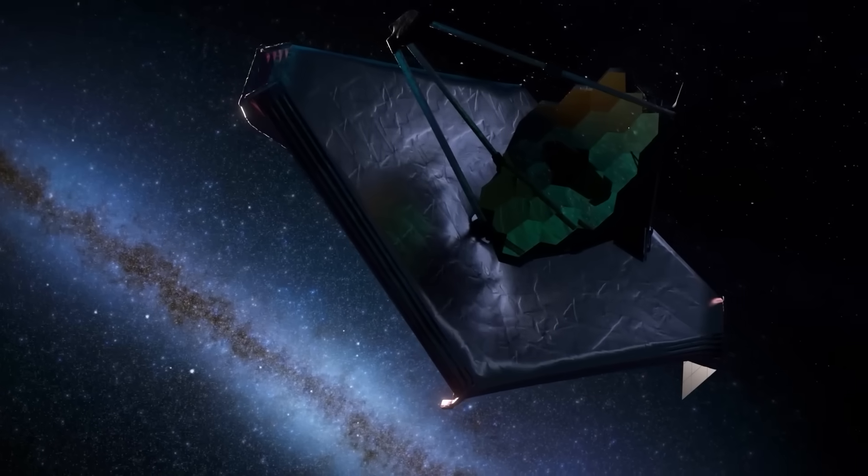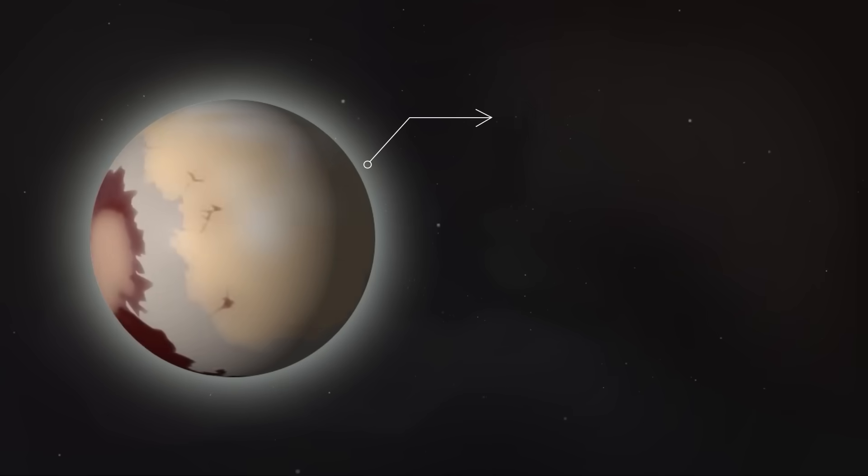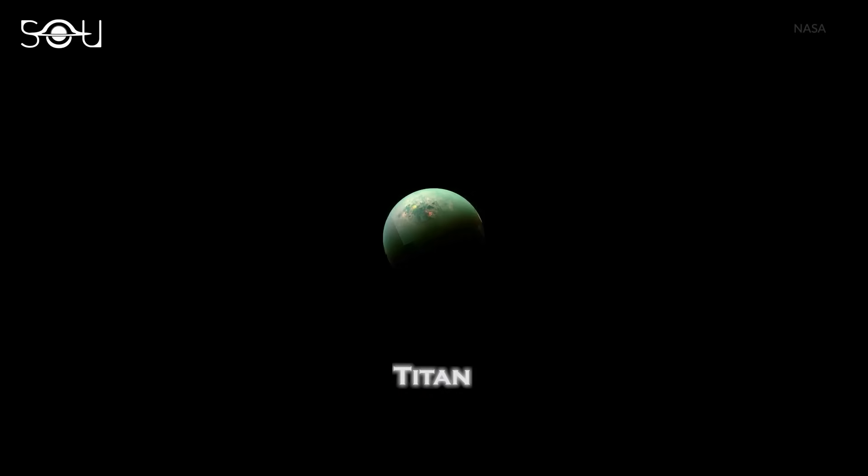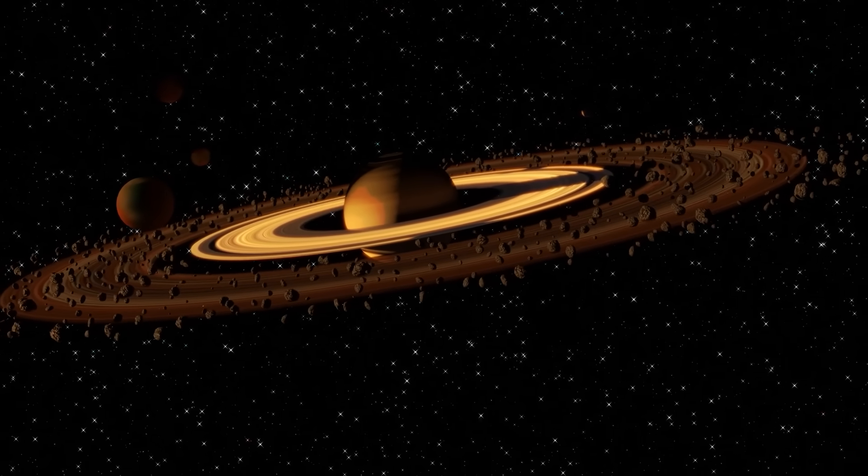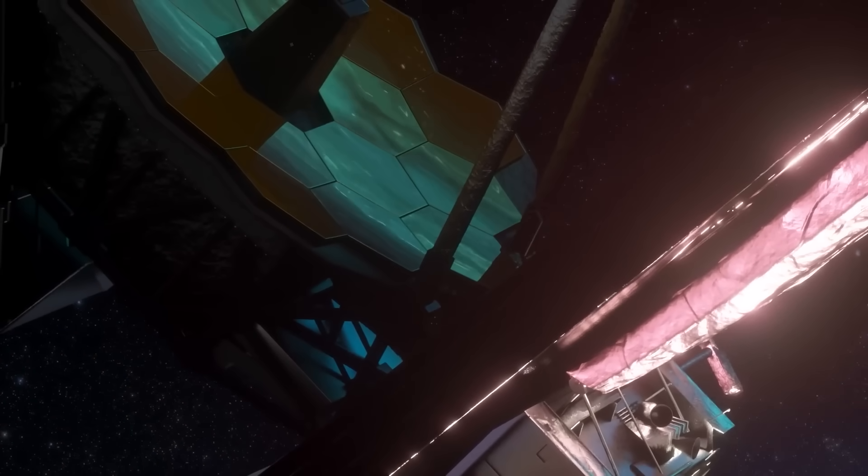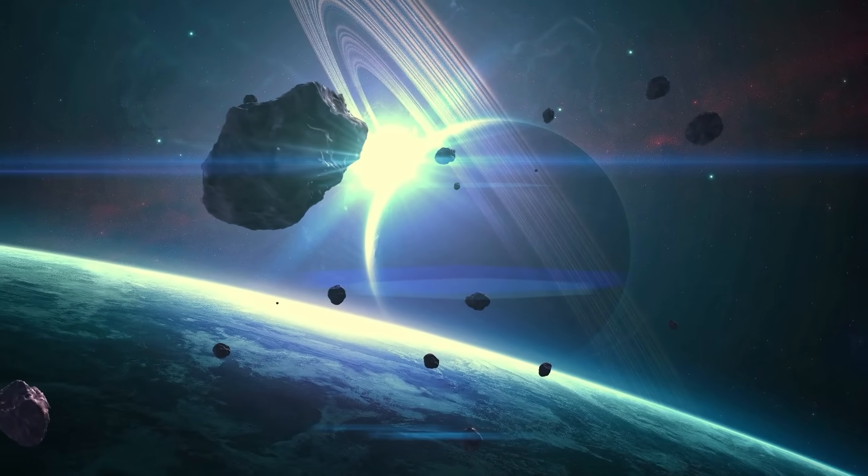After Webb confirmed that Pluto's haze was actively cooling its atmosphere, scientists began wondering what else might share this strange phenomenon. The first suspect was Titan, Saturn's largest moon, a world already famous for its thick orange haze and methane-rich skies. Webb turned its gaze toward Titan's limb, and what it found was eerily familiar. The same infrared wavelengths seen in Pluto's glow appeared again, but stronger.